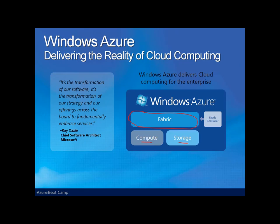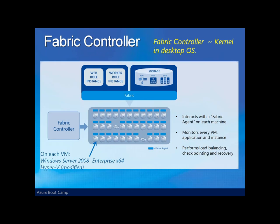The Fabric and the applications and data that reside in it are monitored and controlled by the Fabric Controller. The Fabric Controller is the automated service management system that handles provisioning, geodistribution, and the entire lifecycle of cloud-based services. In essence, the Fabric Controller acts as a kernel that you'd see in any other desktop OS. It communicates with a Fabric agent running on each machine, and is also aware of every application and storage, which it just sees as another application running in the Fabric.